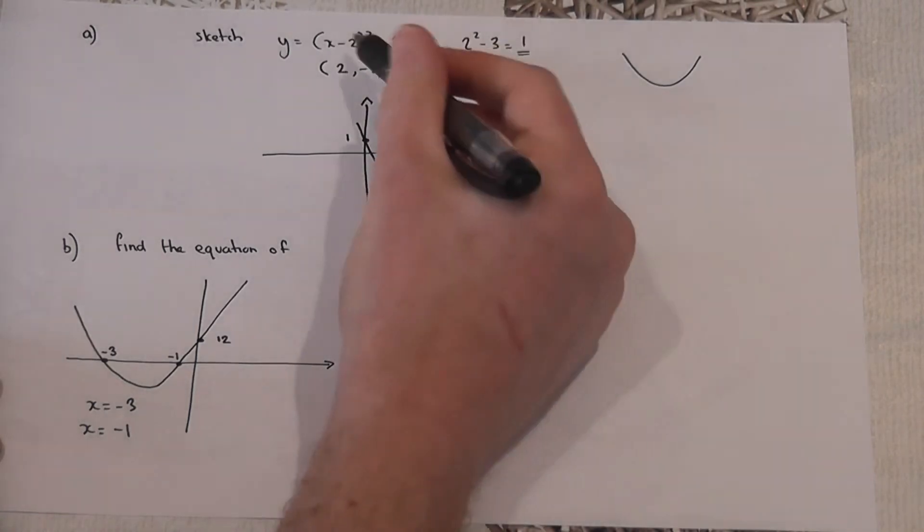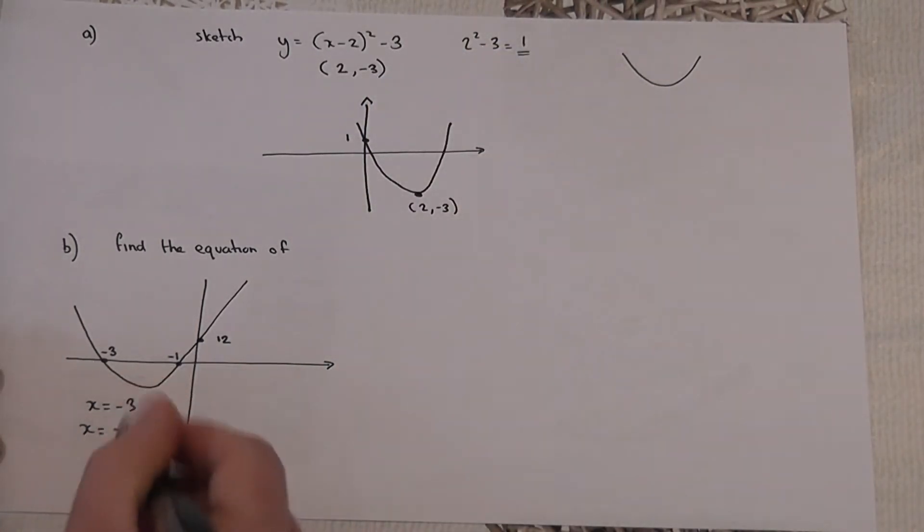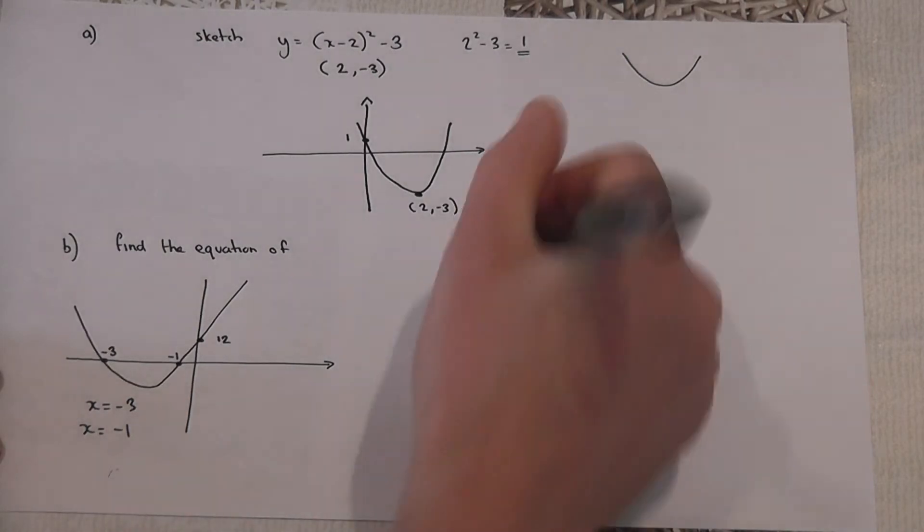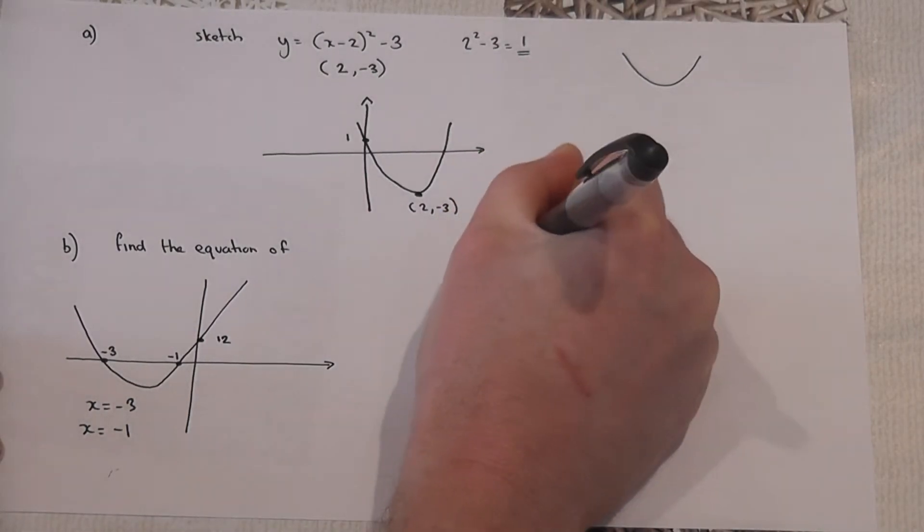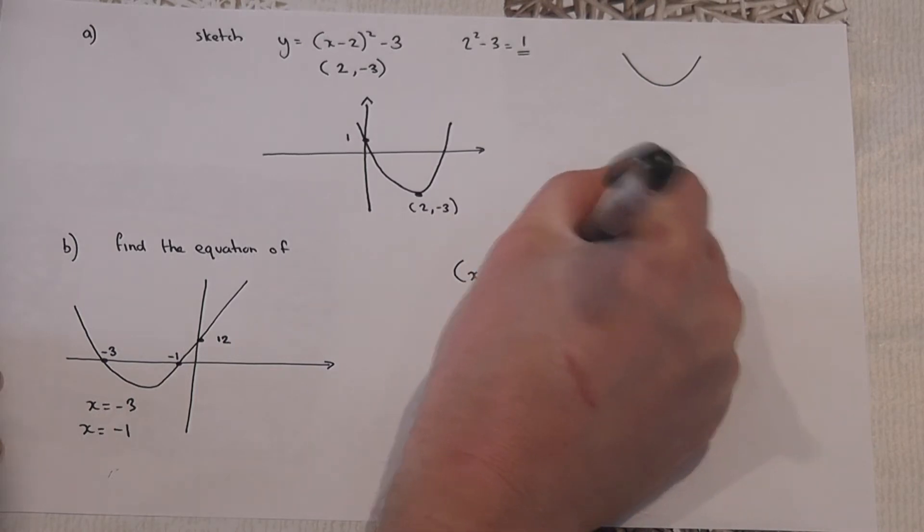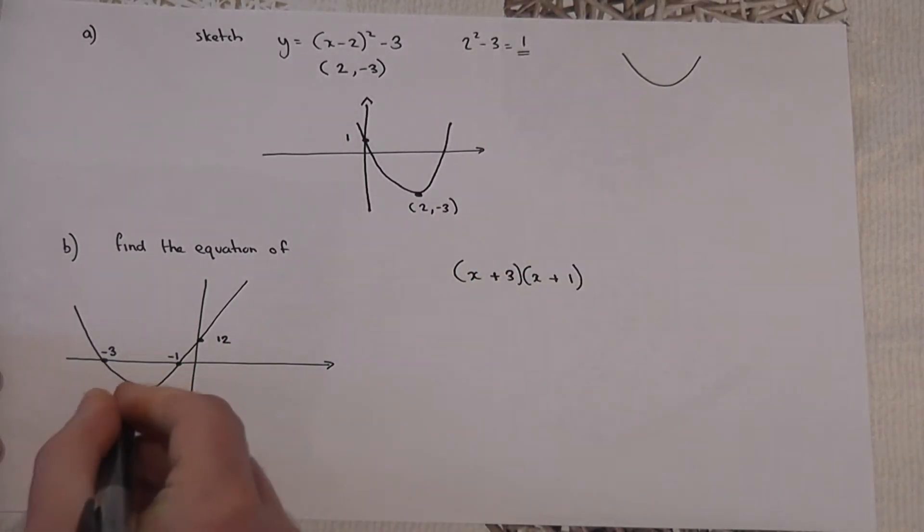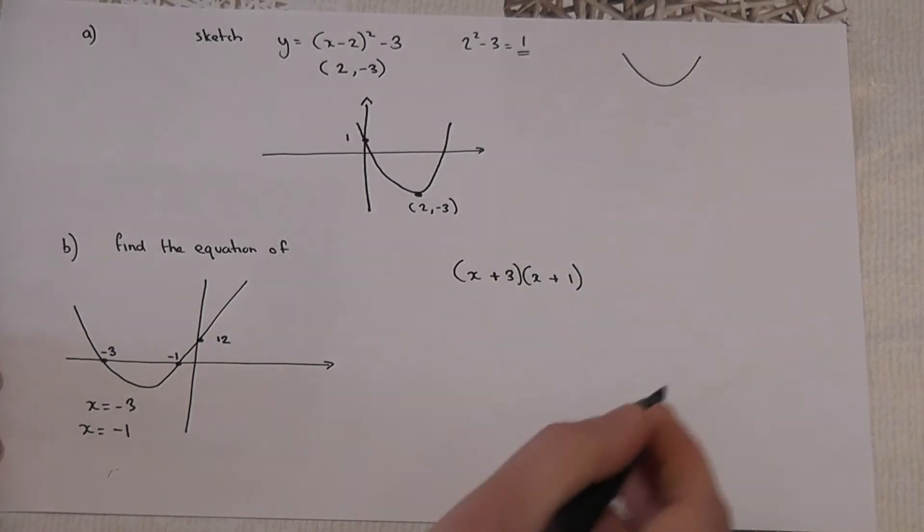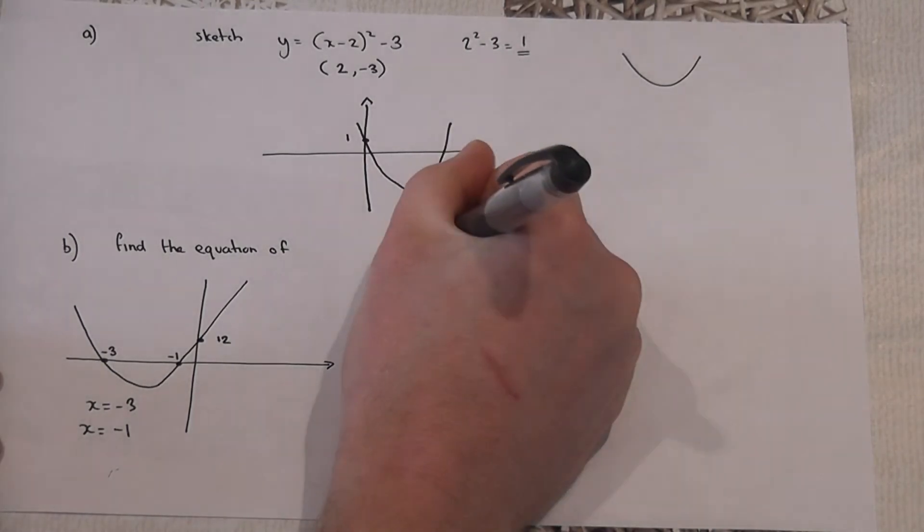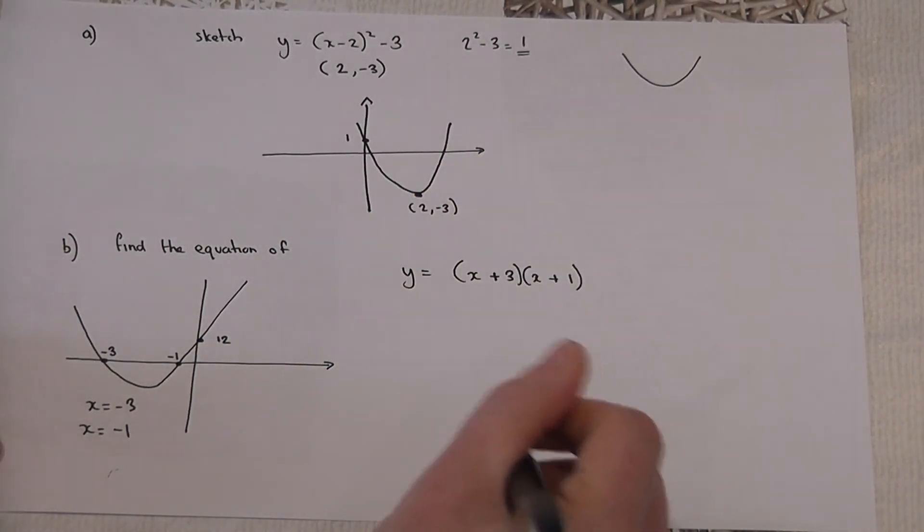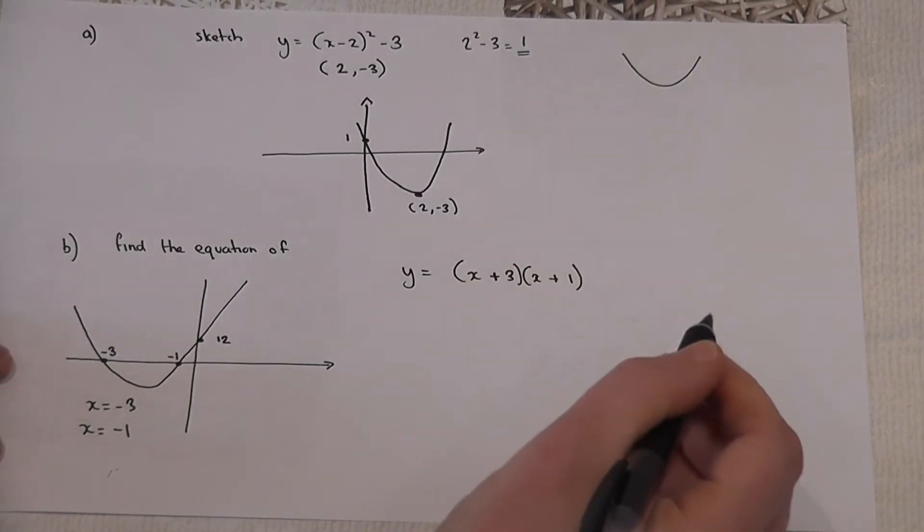And a bit like before when we change the sign, if they're the roots or the solutions then the equation must be of the form (x + 3) and (x + 1). I've changed the signs to get the factors. So therefore the graph must be of the form (x + 3)(x + 1).